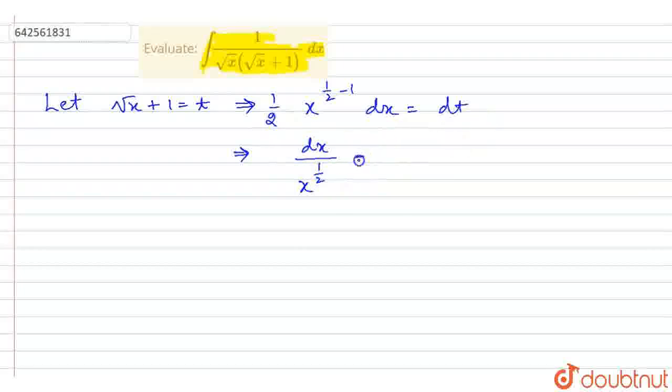Right. Now, this 2 multiplied by dt is equal to twice of dt. So, we have dx upon square root of x is equal to twice of dt. So, now our integration is integration of dx divided by root x upon root x plus 1.